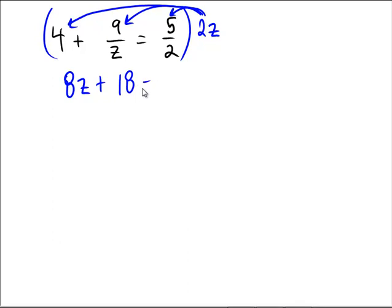And then in the last spot, on the other side of the equal sign, the 2's would cancel, and we'd be left with 5 times z, and so that's 5z.